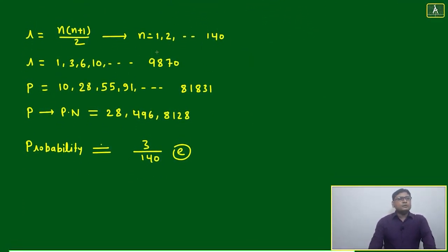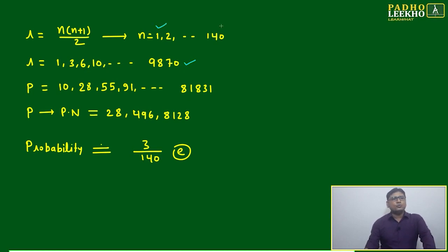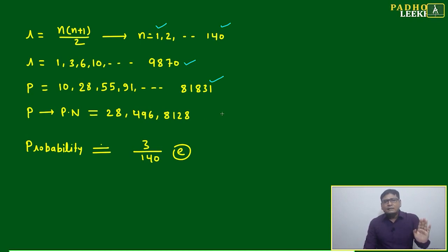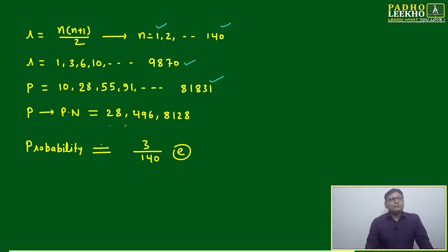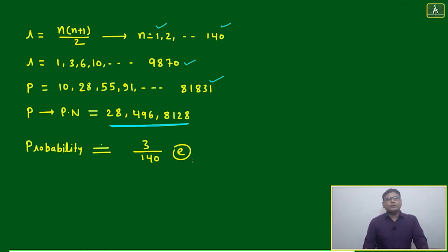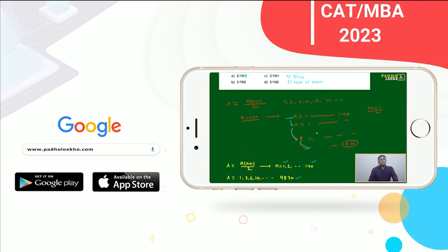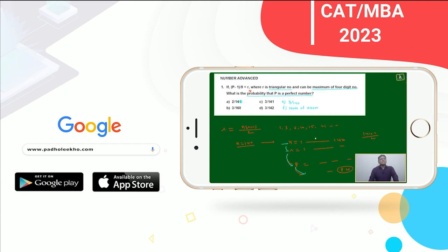So r takes values 1, 3, 6, 10... up to 9870, and n goes from 1 to 140, giving p values of 10, 28, 55, 91, and so on. Out of all these values, we know the perfect numbers are only up to 8128 — beyond that it becomes a seven-digit number and is out of scope. So up to 8128, we have only three perfect numbers: 28, 496, and 8128. Therefore the probability is 3 out of 140. It looks easy now — but if you don't know all these concepts, you cannot solve this question. Keep it as a learning exercise.